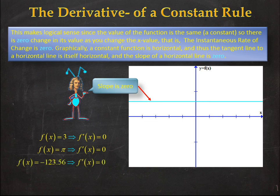How about minus 123.56? Its derivative is also equal to zero. The derivative of any constant function is always equal to zero.